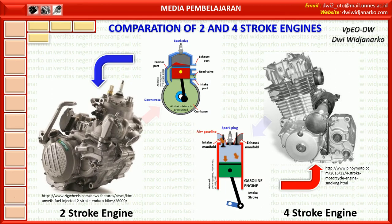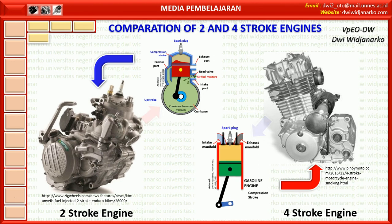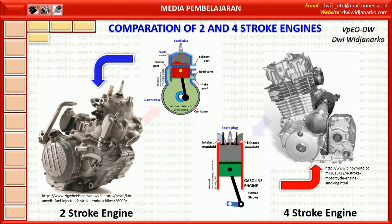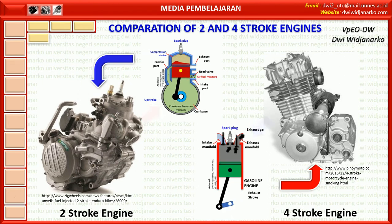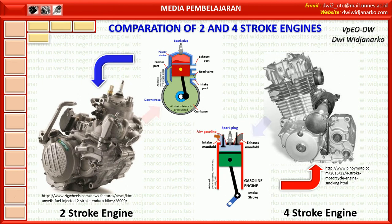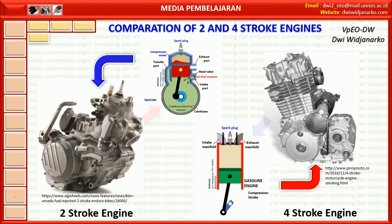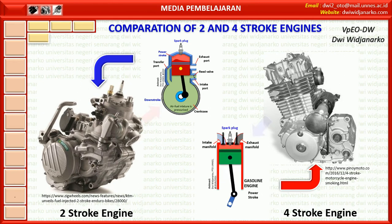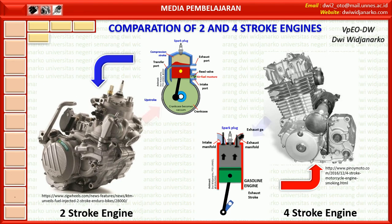The weight of the 2 stroke engine is lighter than the 4 stroke engine. Consumption of lubricating oil is more in 2 stroke than 4 stroke engine. The 2 stroke has less thermal efficiency than the 4 stroke engine. In a 2 stroke engine, the mechanical efficiency is more than 4 stroke because of less friction in the parts. In a 2 stroke engine, there is 1 power stroke per 1 revolution of the crankshaft, while the 4 stroke engine requires 2 revolutions of the crankshaft for 1 power stroke.